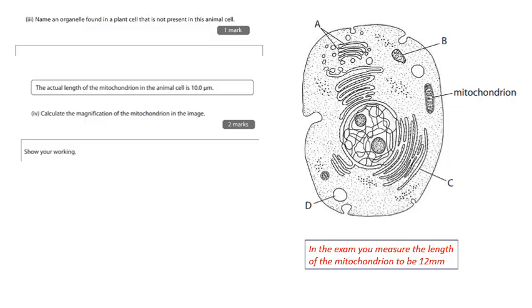Name an organelle found in a plant cell that is not present in this animal cell, and you should remember from your year seven science lessons, the obvious ones are chloroplasts and cell walls.